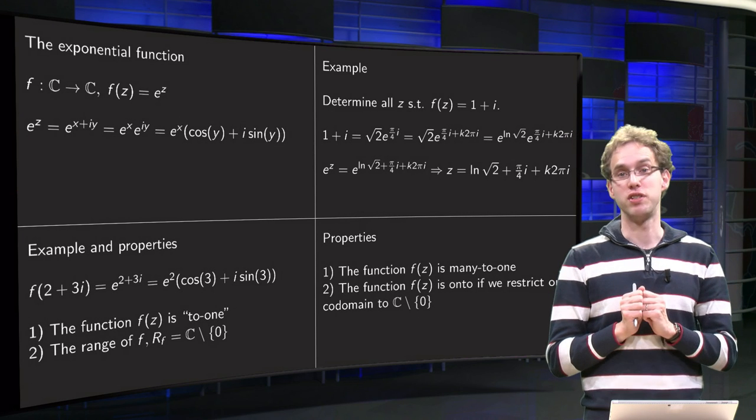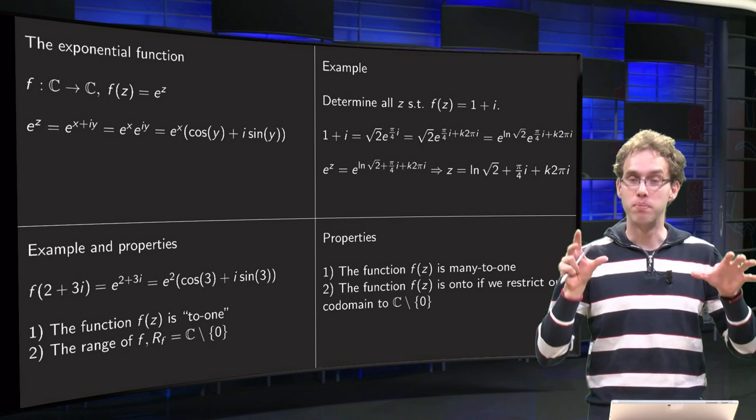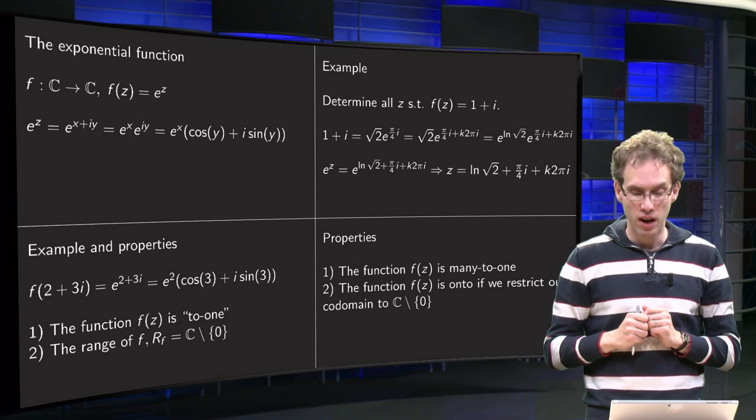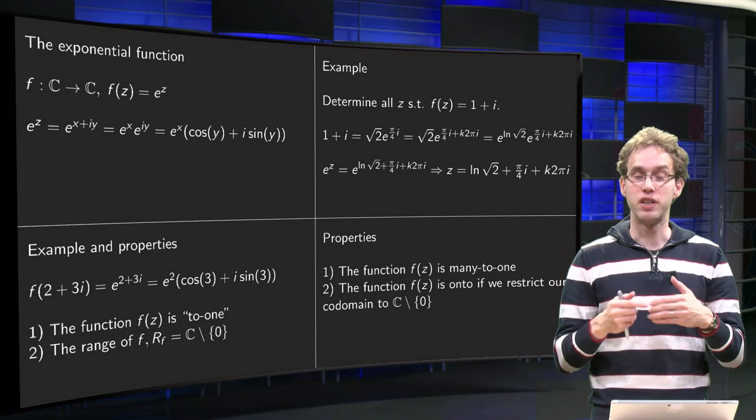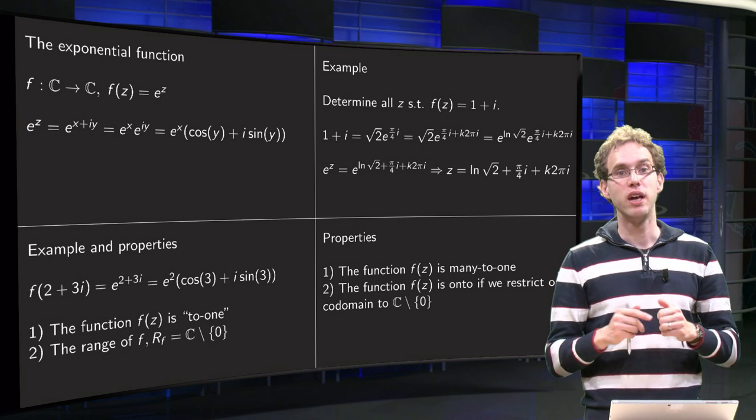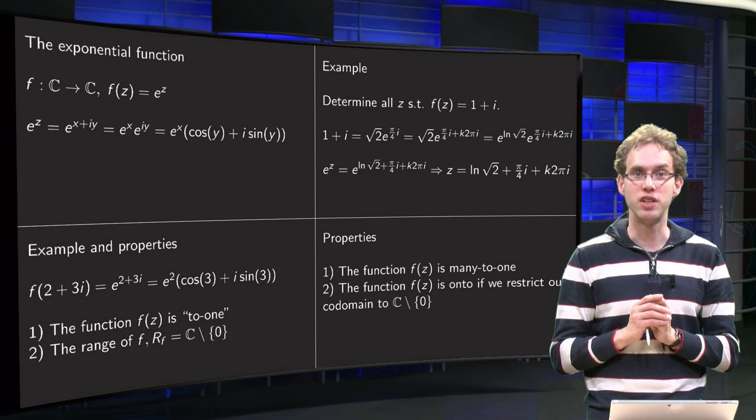And that is what we see in property number 1: the function f of z is many-to-one. Many values are mapped to the same point. And furthermore, the second property: the function f of z is onto if we restrict our codomain to C with the exception of 0.